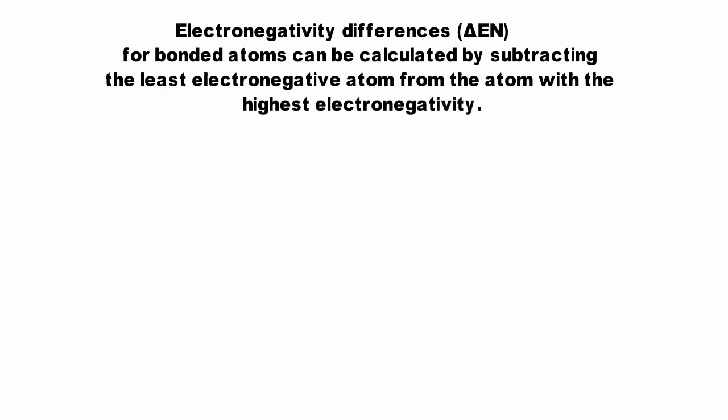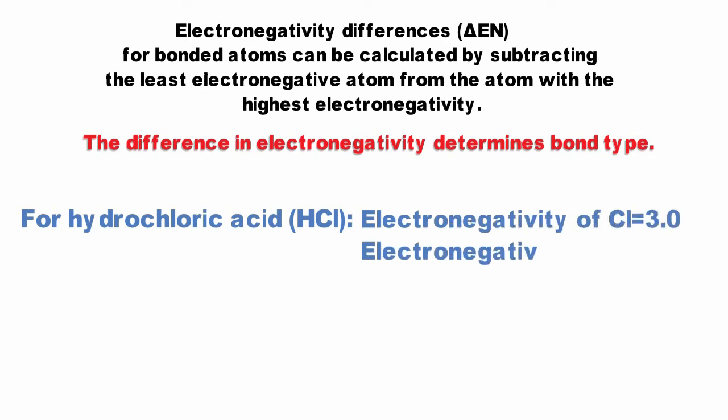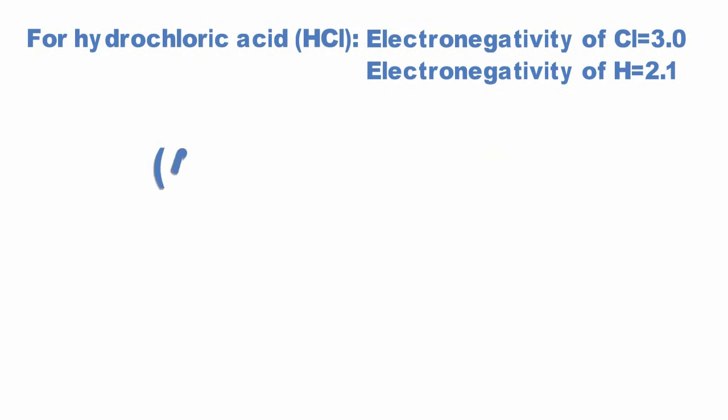The difference in electronegativity dictates what type of bond is present in the compound. The electronegativity difference for hydrochloric acid is determined by subtracting the electronegativity value of the hydrogen atom, 2.1, from the electronegativity of a chlorine atom, 3.0. This gives hydrochloric acid an electronegativity difference of 0.9. We will learn later how this difference correlates to different bond types.